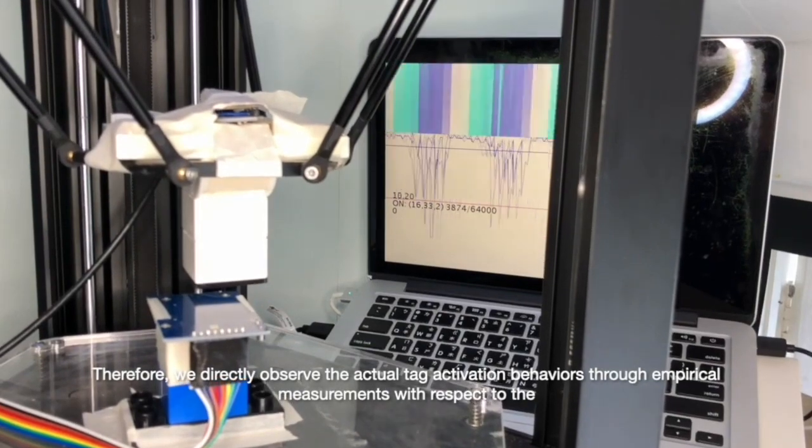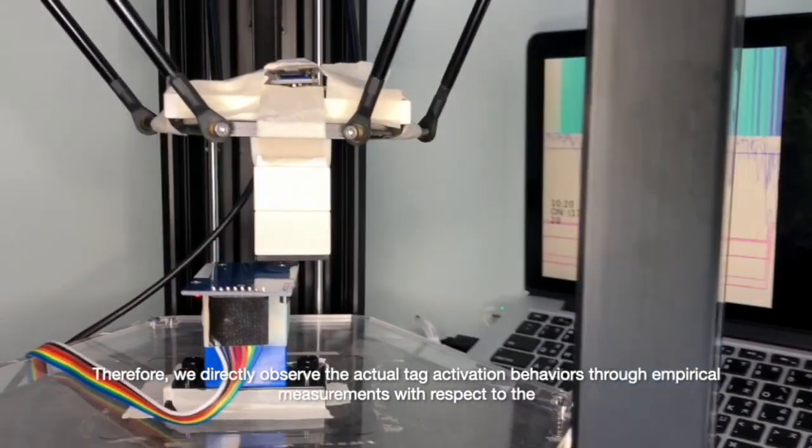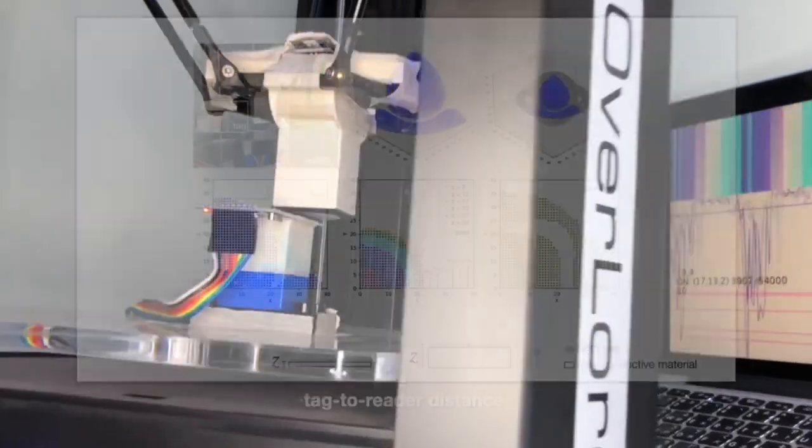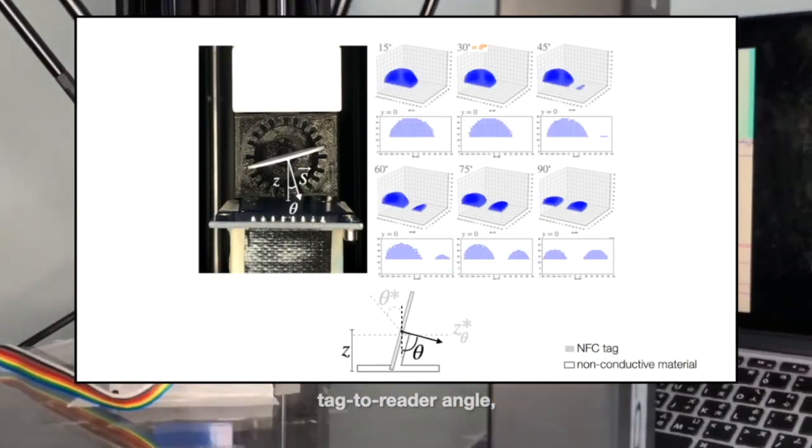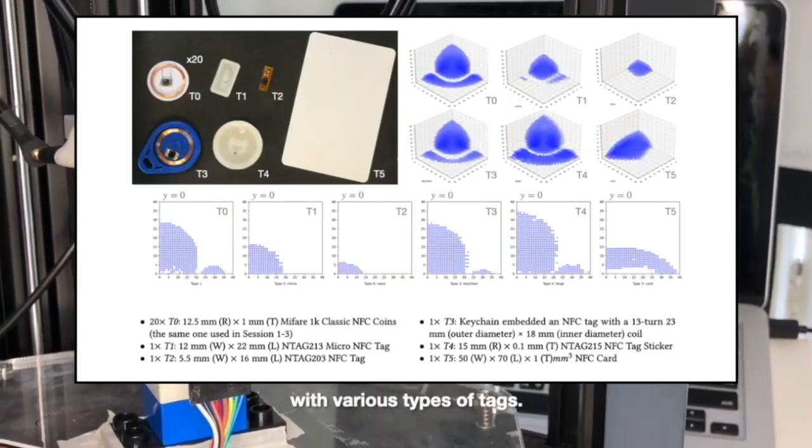Therefore, we directly observe the actual tag activation behavior through empirical measurements with respect to the tag-to-reader distance, tag-to-reader angle, and tag-to-tag distance with various types of tags.